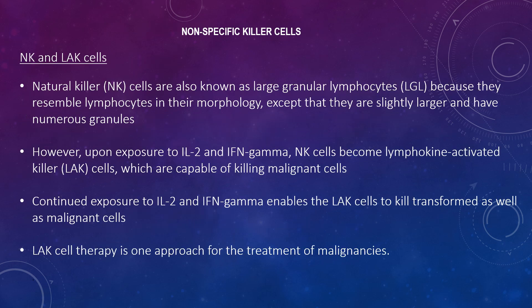Natural killer cells are also known as large granular lymphocytes because they resemble lymphocytes in morphology, except that they are slightly larger and have numerous granules. They can be identified by the presence of CD56 and CD16 and a lack of CD3 cell surface markers. These cells are capable of killing malignant cells, but are insufficient in doing so alone. However, upon exposure to IL-2 and interferon gamma, they become lymphokine activated killer cells, which are capable of killing malignant cells. Continued exposure to IL-2 and IFN-gamma enables LAK cells to kill transformed malignant cells, and LAK cell therapy is one approach for treatment of malignancies.